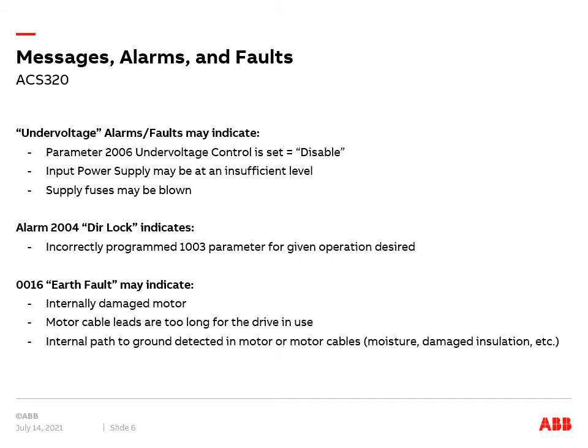Undervoltages occur when fuses are blown on the line side of the drive. They can also be caused by a bad transformer or other reduced supply network voltage level. Alarm 2004, Direction Lock, occurs when parameter 1003 is programmed incorrectly.